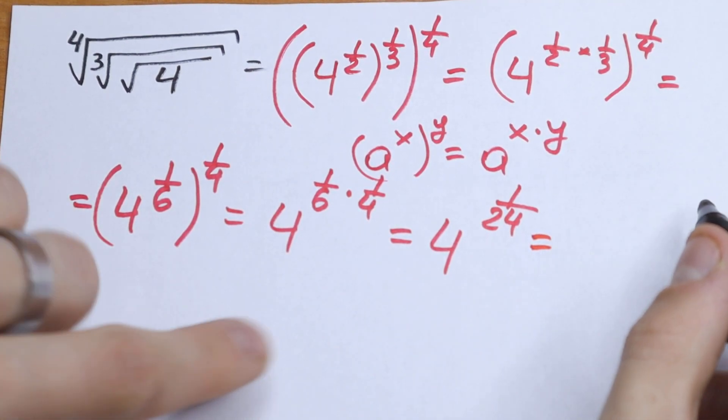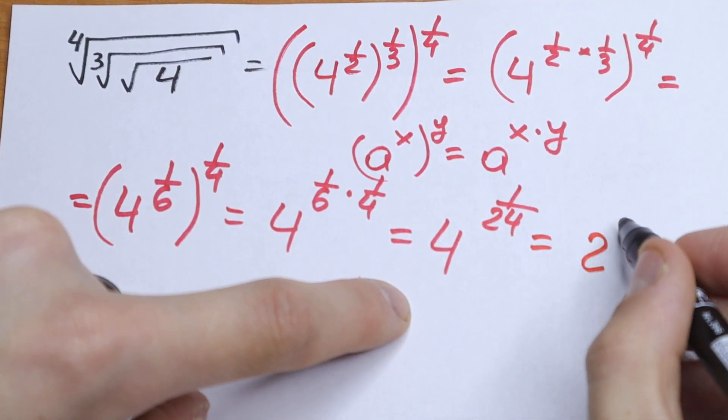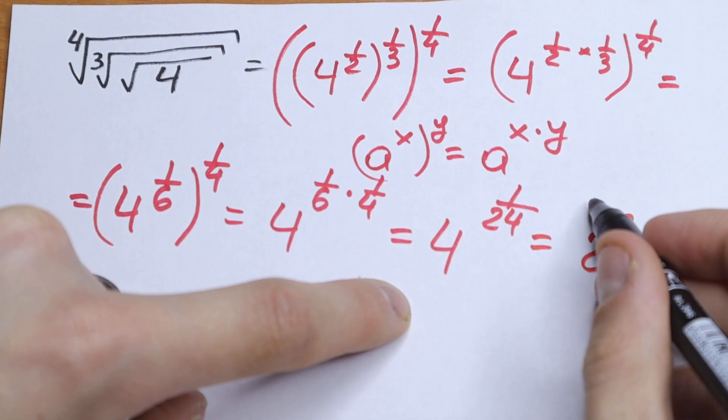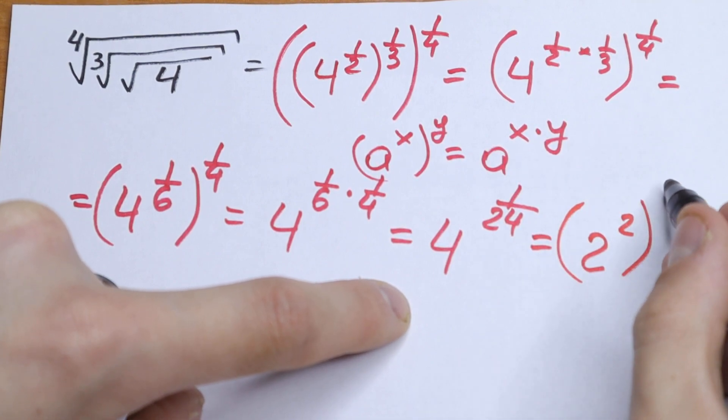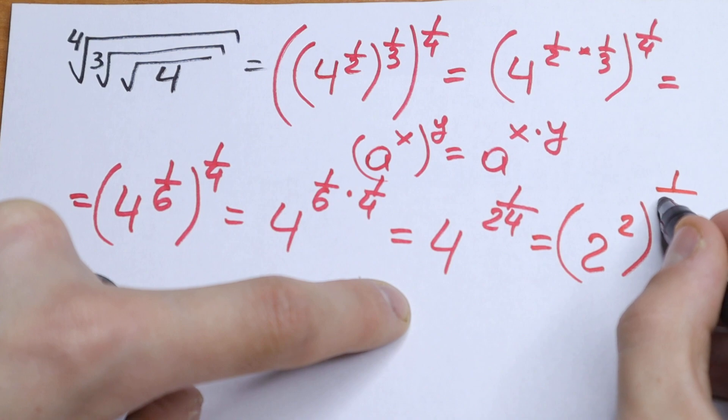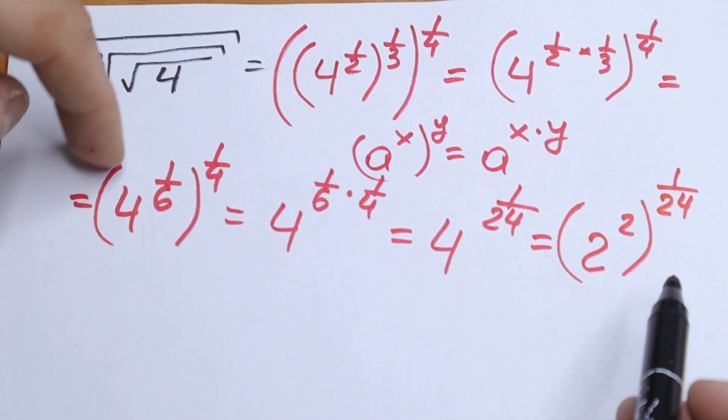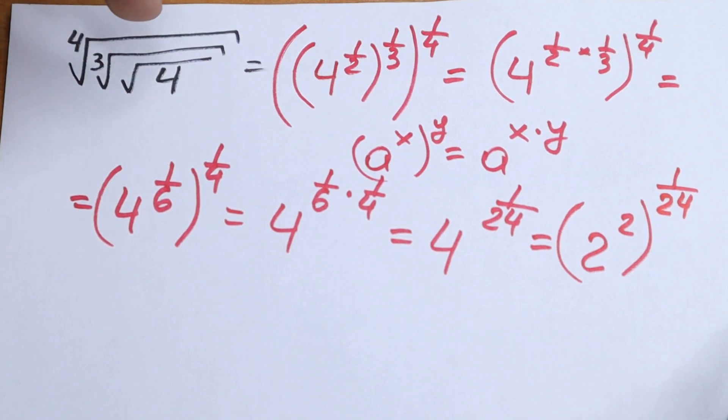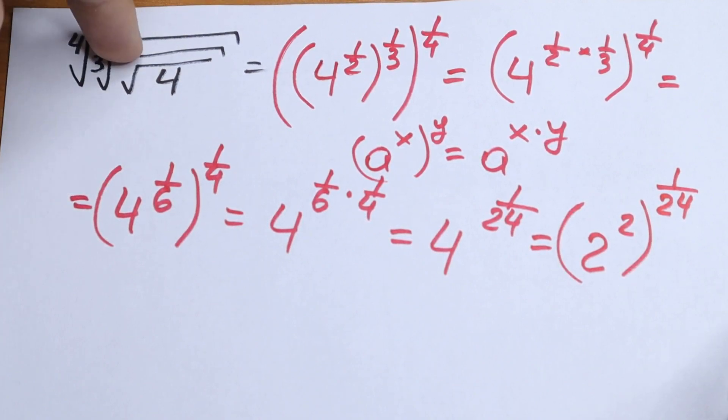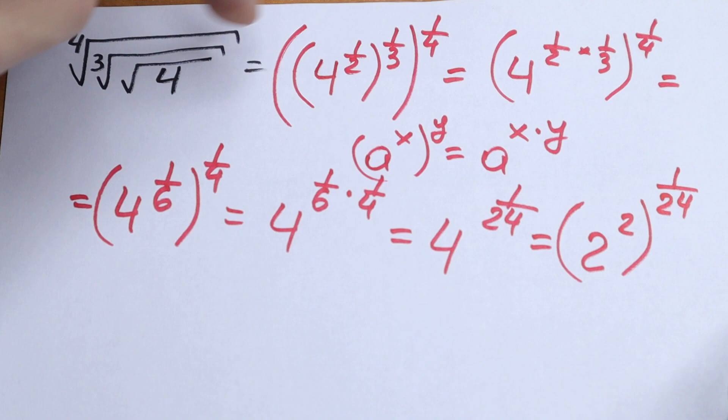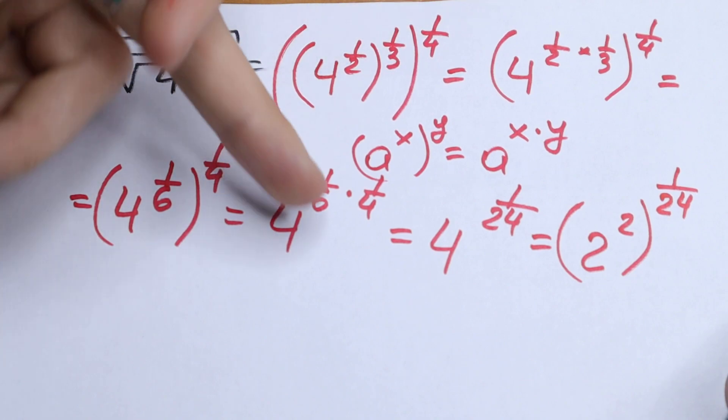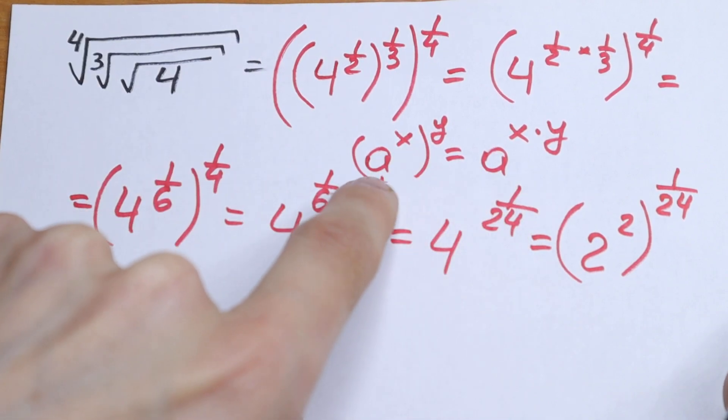We can rewrite this 4 as 2 squared, and if we rewrite it in that way, we can write it as raised to the power 2 times one over twenty-four. And let's apply this rule once more. So, as you can see, we just need to rewrite these root signs in the way of powers and apply this rule three times.